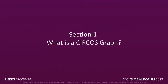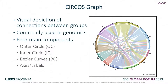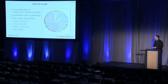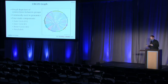What is a Circos graph? It's something I'd never heard of. It is a circular graph—a visual depiction of connections between groups. In this picture we have ten different groups, with curves that start from one group and move to another. They're used primarily in genomics or genetic graphs to show how different pathways are transforming. From my research, there are four main components: an outer circle, an inner circle, Bezier curves, and axes and labels.